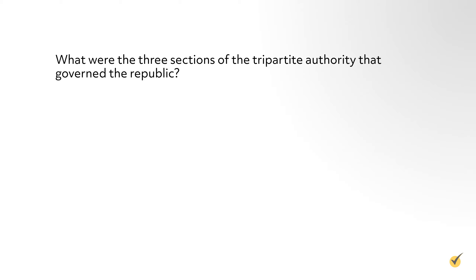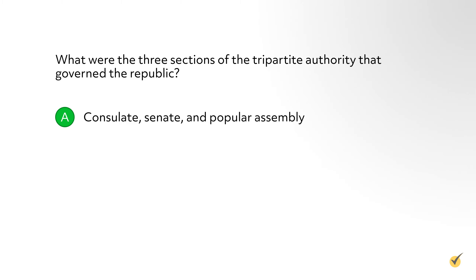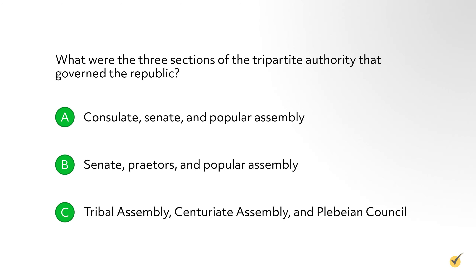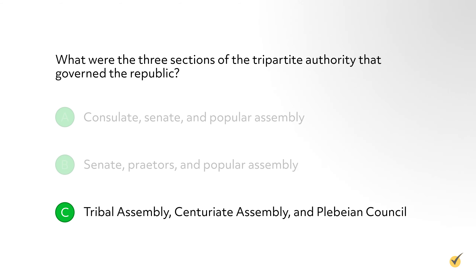What were the three sections of the tripartite authority that governed the Republic? A: Consulate, Senate, and Popular Assembly. B: Senate, Praetors, and Popular Assembly. Or C: Tribal Assembly, Centurite Assembly, and Plebeian Council? The correct answer is A — the Consulate, Senate, and Popular Assembly. The Tribal Assembly, Centurite Assembly, and the Plebeian Council were all factions of the Popular Assembly.